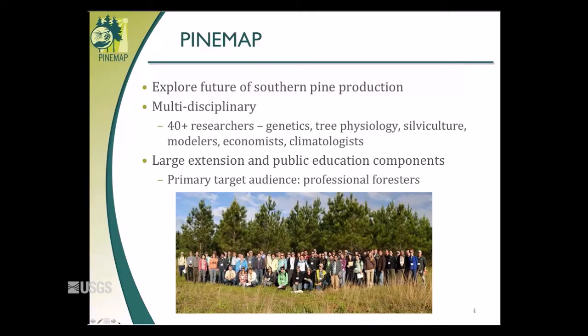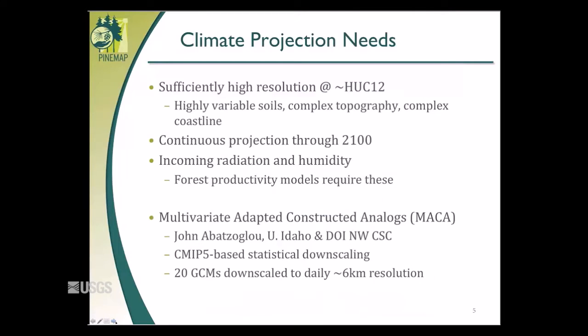Thinking about the types of questions a common audience would have, we see similar issues when thinking about Pine Map. They had longer-term climate model needs that were pretty specific. They wanted sufficiently high resolution — approximately HUC-12 spatial resolution — because of the nature of the variability they see in pine productivity across the Southeast. We have highly variable soils across the southeastern U.S.